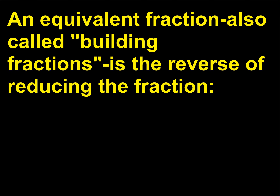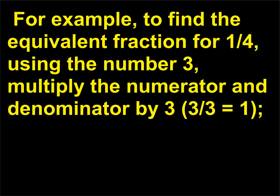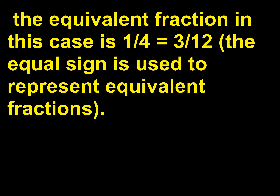An equivalent fraction, also called building fractions, is the reverse of reducing the fraction. Instead of searching for the 1 in the fractional mix that you can reduce, you insert a 1 and build the fractions. For example, to find the equivalent fraction for 1/4 using the number 3, multiply the numerator and denominator by 3: 3/3 = 1, so 1/4 × (3/3) = (1×3)/(4×3) = 3/12. Therefore, the equivalent fraction in this case is 1/4 = 3/12.